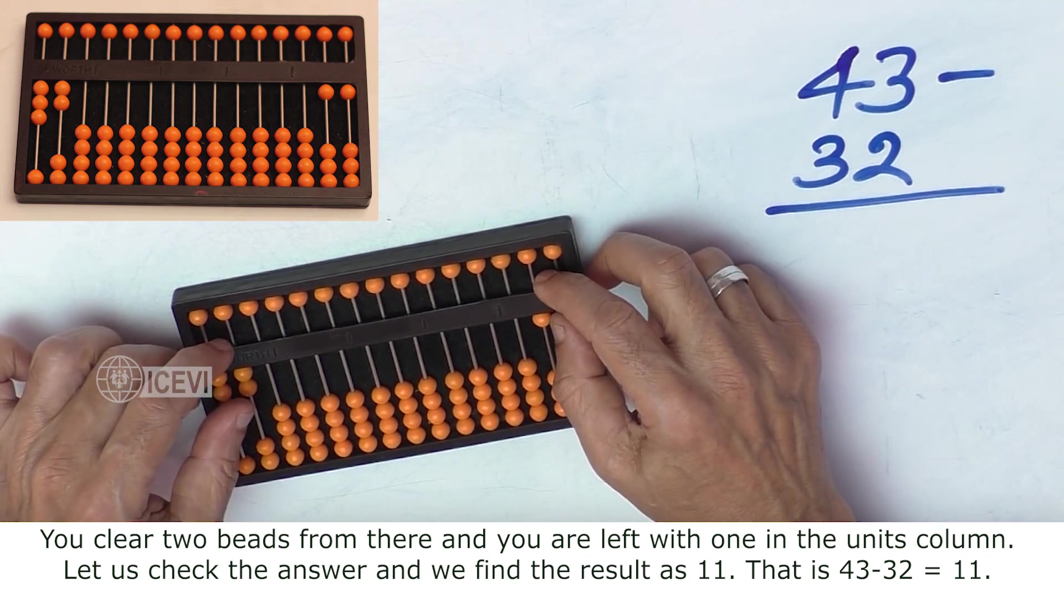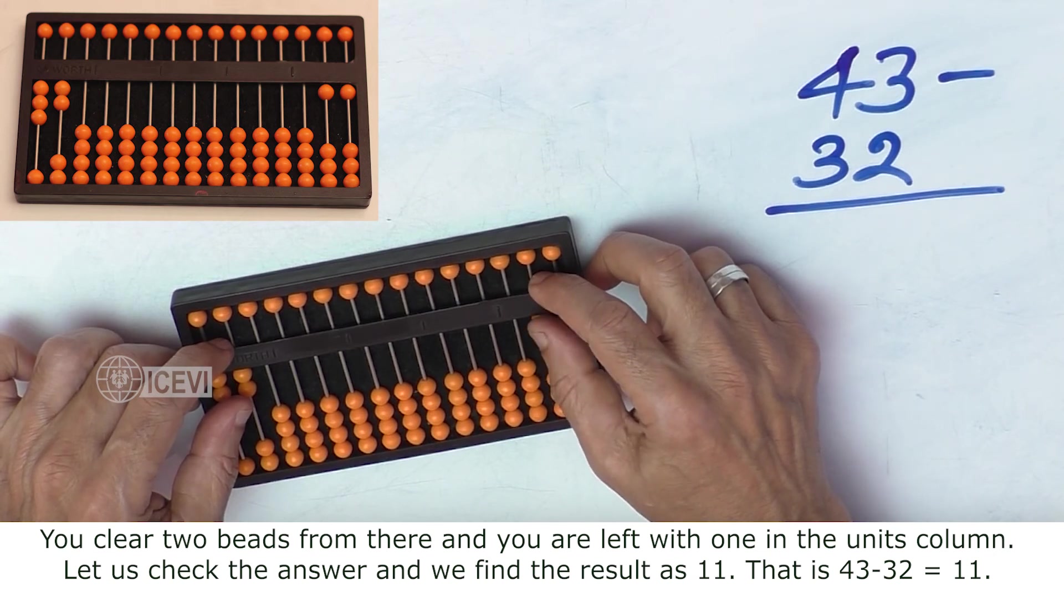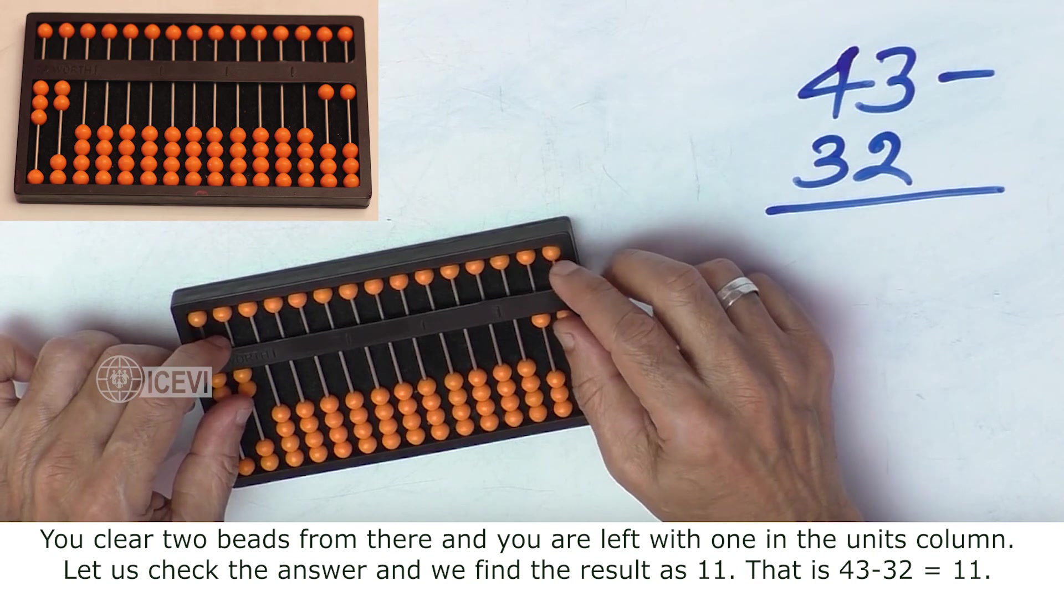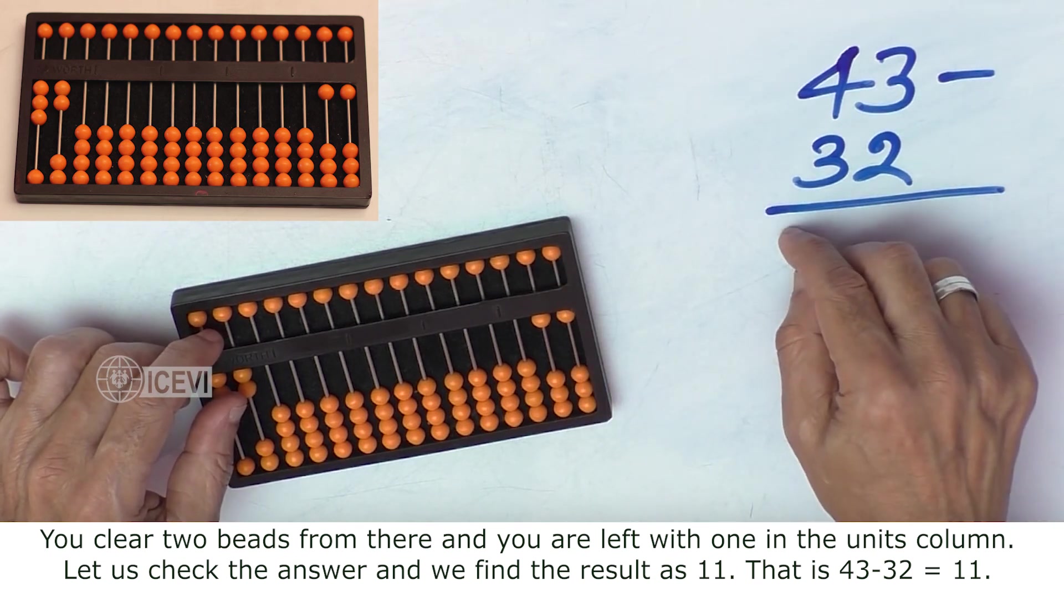Let us check the answer and we find the result as 11. That is, 43 minus 32 becomes 11.